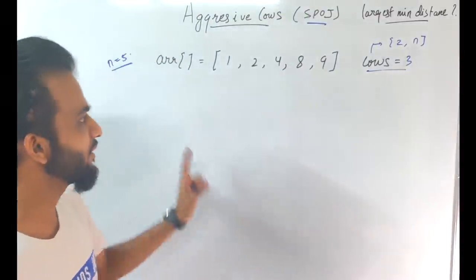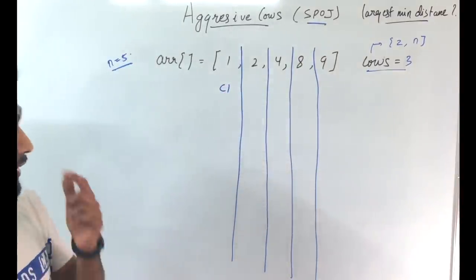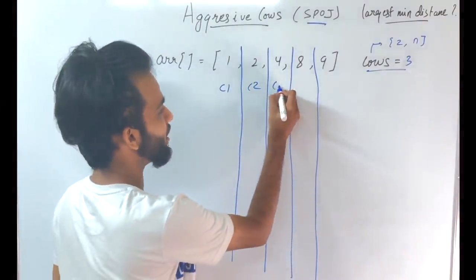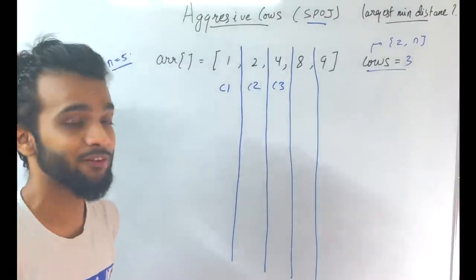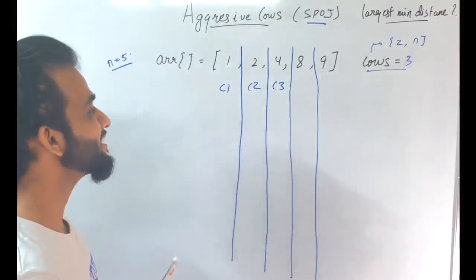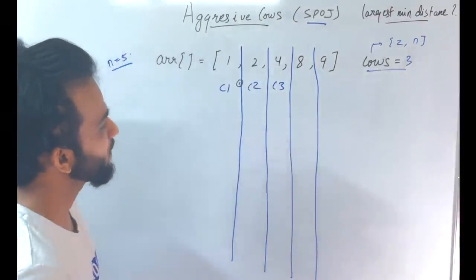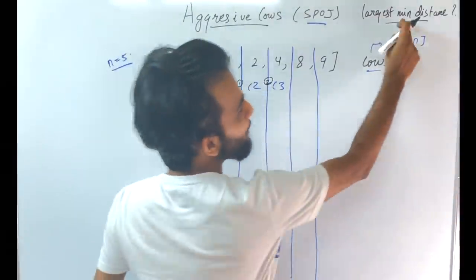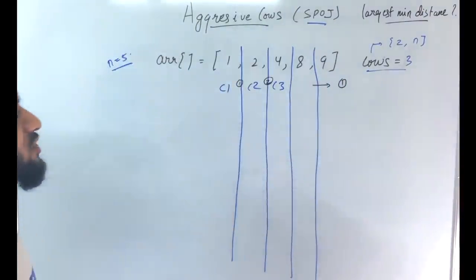Let me explain. Let's try placing three cows: cow 1 here, cow 2 here, cow 3 here. In this configuration, the distance between cow 1 and cow 2 is 1, and the distance between cow 2 and cow 3 is 2. The minimal distance among these is 1, so you get 1 for this configuration.